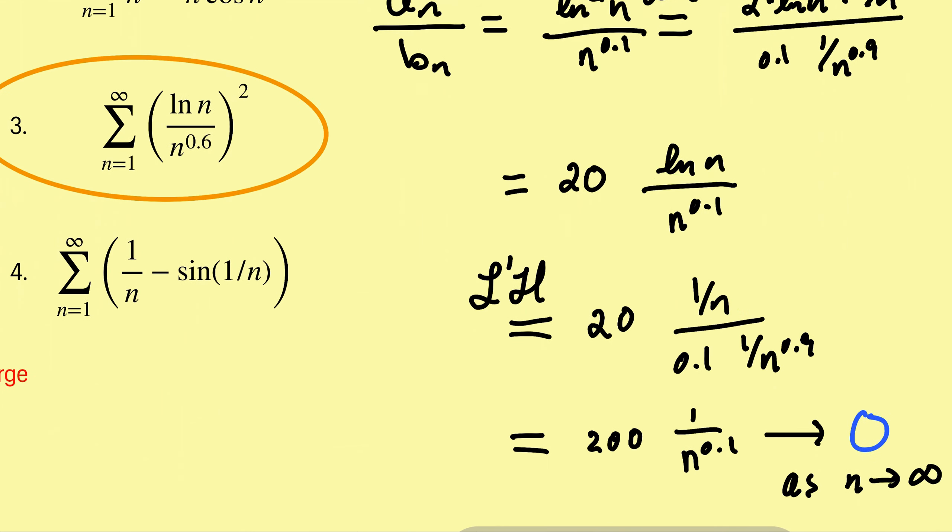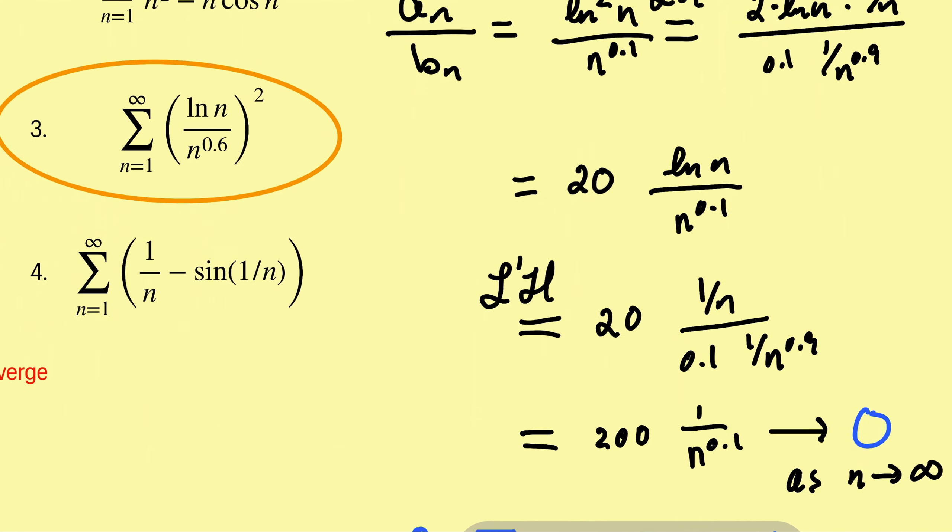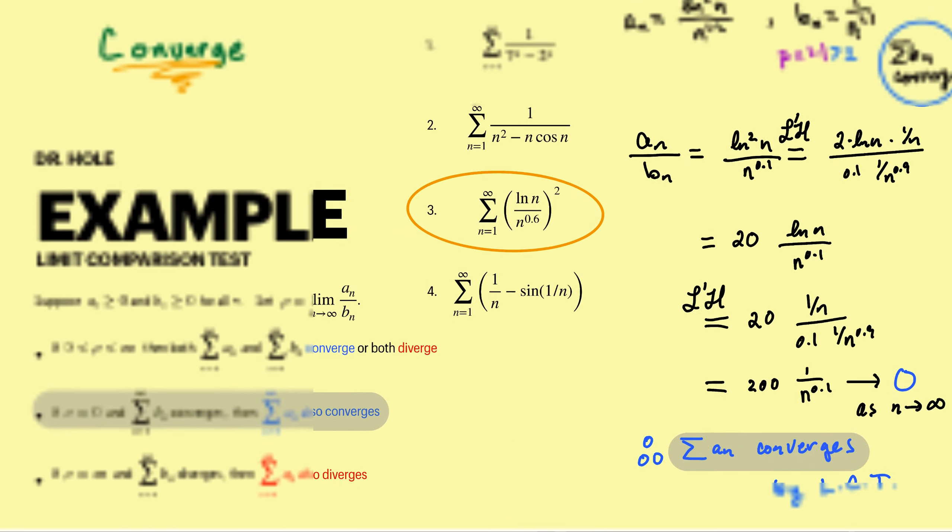Ln goes to 1 over n, n to the 0.1 produces another 0.1 times 1 over n to the 0.9. Cleaning up the n's, since we have a full n up against n to the 0.9, will be left with n to the 0.1 in the bottom. As n blows up this denominator gets large, 1 over large goes to 0 as n goes to infinity.